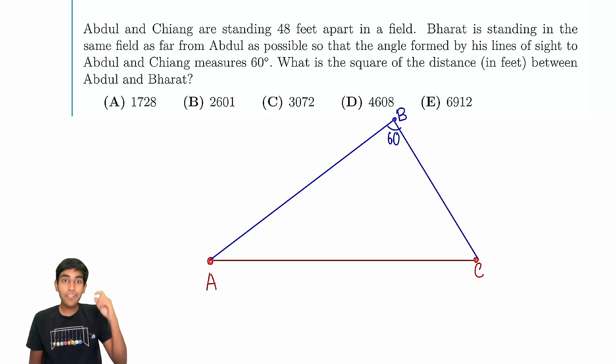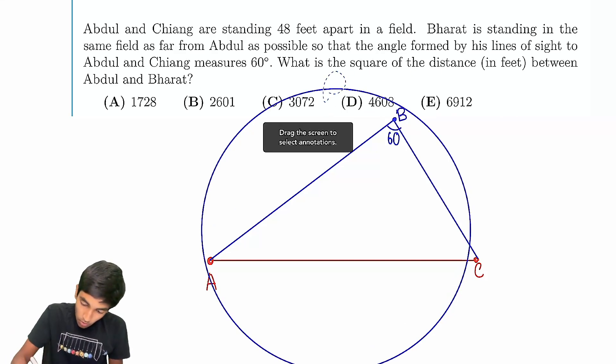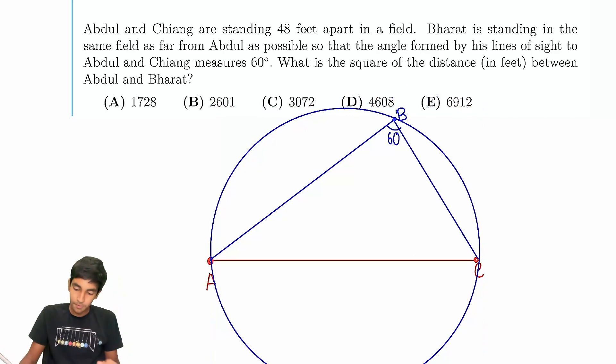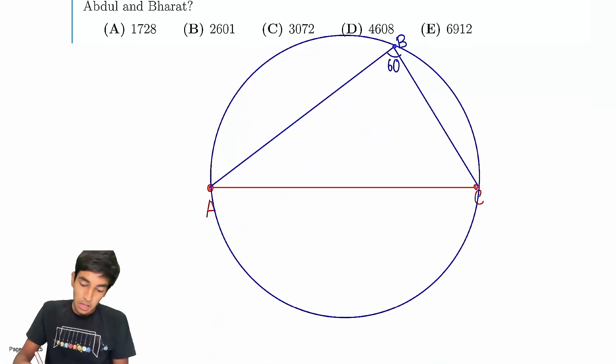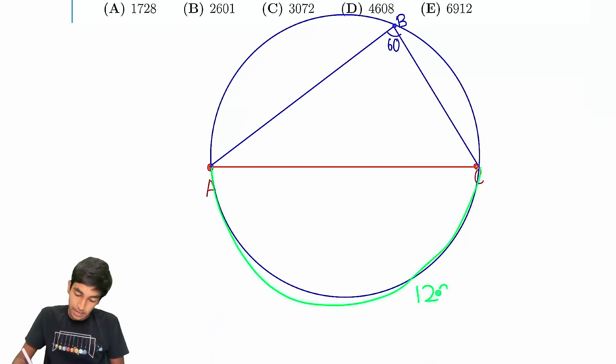The key thing to realize, inscribed angle theorem. If this angle is always 60, then let's just say we draw, you know what, maybe let's draw a better circle. So we can say that, obviously I know this diagram is not perfect, but if we draw this circle, and we say that this arc has a 120 degree, is a 120 degree arc.